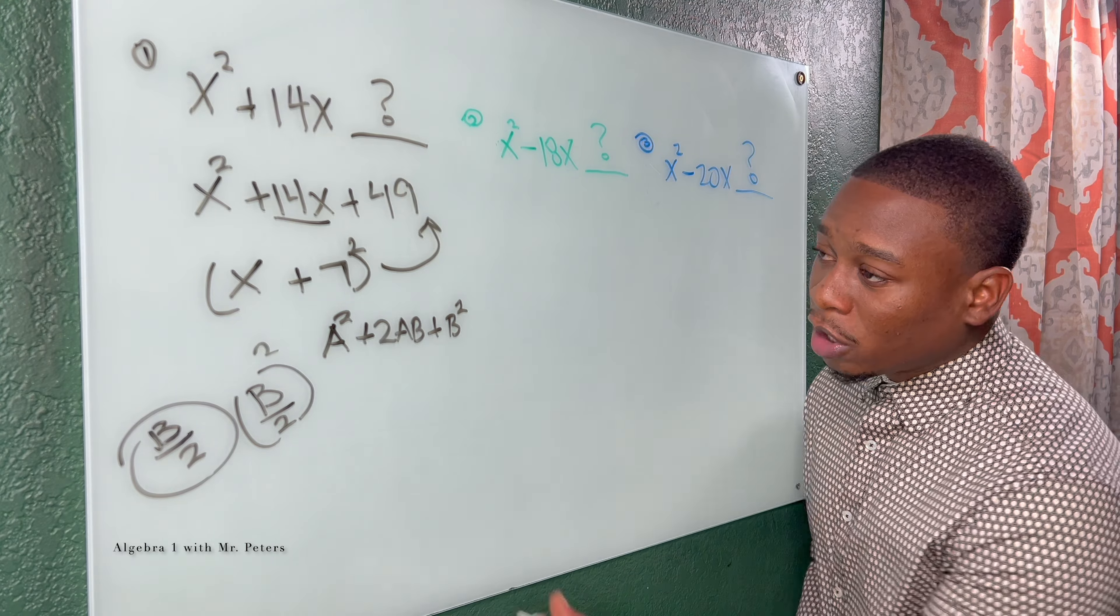So if we look at this trinomial and look at the format, we know x squared is just x. 49, b squared is just 7 squared. And then when we look at that middle term, 14x, it does follow the format of 2 times a which is x times b which is 7. That will give us that 14x.